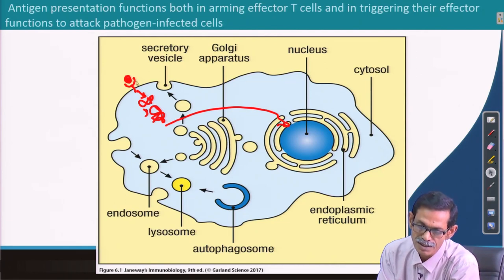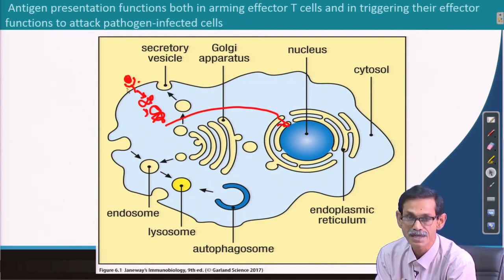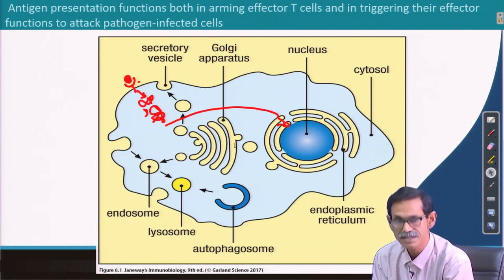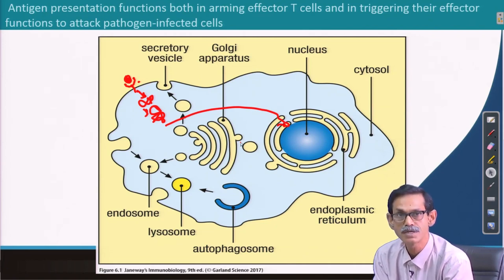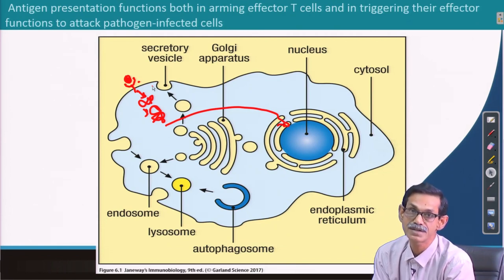This particular receptor — if it is MHC — should also recycle. Today we are going to talk about how antigen is processed, fitted into MHC, and sent to the cell membrane so that T cells can recognize it.